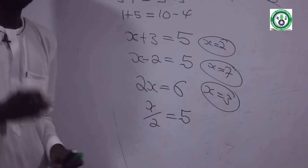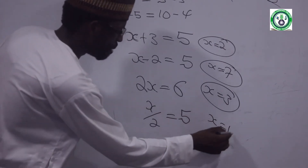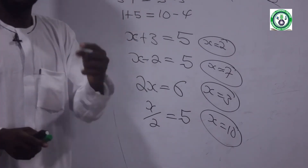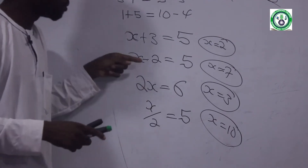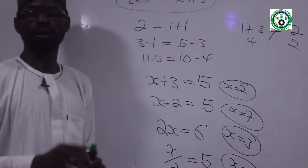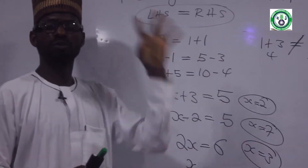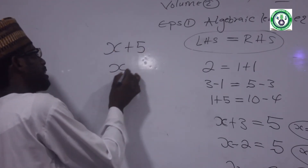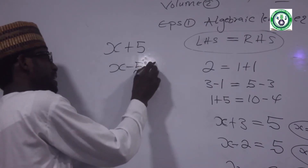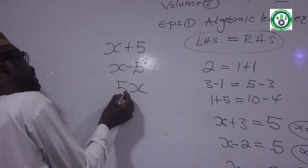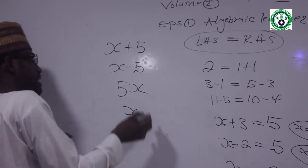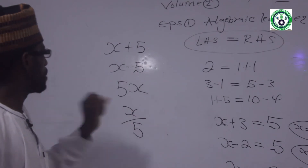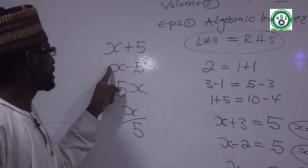A certain number — if I divide it by 2, it gives 5. For example: x plus 5 means a certain number plus 5; x minus 5 means subtract 5; 5x means multiply by 5; x over 5 means divide by 5.